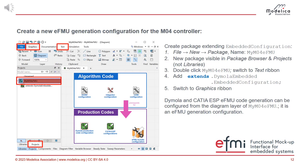What we want to do now is start from scratch — that means we configure the generation of an EFMU. You do that by creating a new package and giving it a name like myM04EFMU, and letting it inherit from DUMULAR Embedded Embedded Configuration. When you do that and go to the graphics layer, you get a nice diagram where you can configure things. Essentially, every configuration for generating EFM use in DUMULAR is done on this screen.